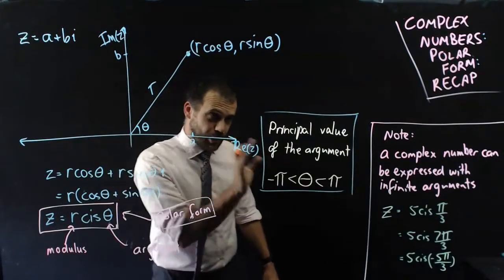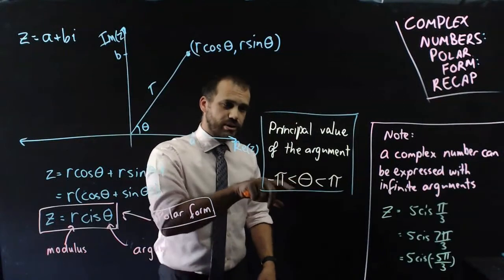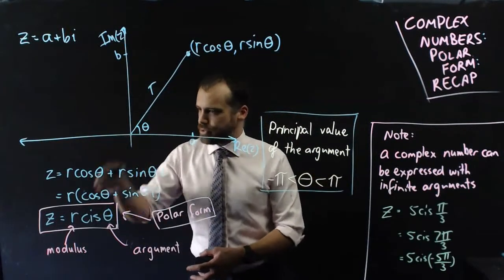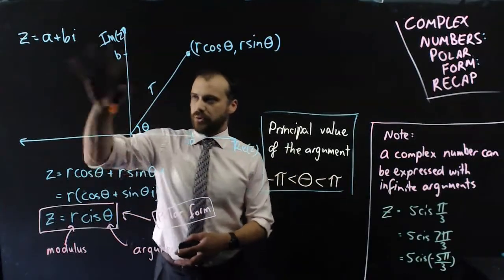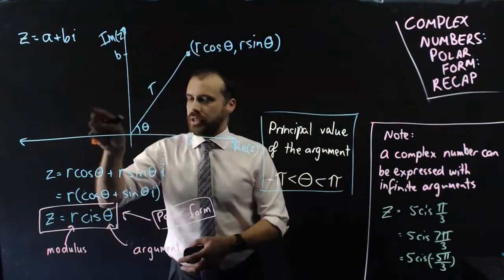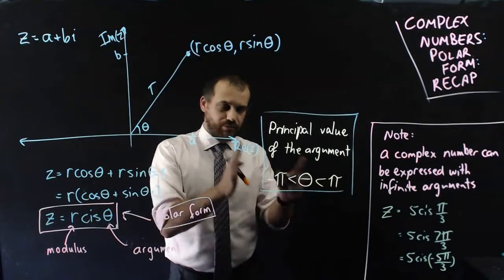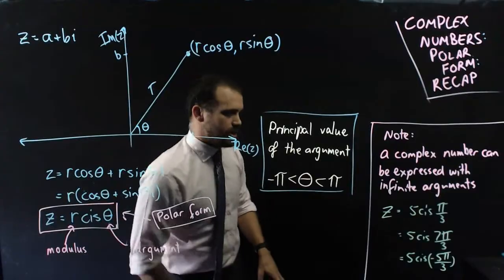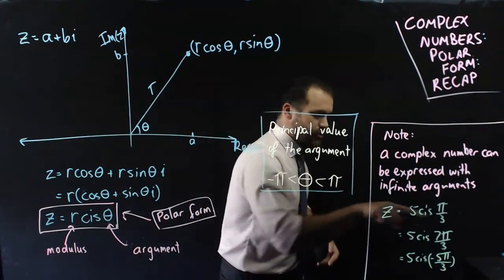But we do have this thing called the principal value of the argument. By convention, it is considered most polite and the principal value of the argument if your theta is between negative pi and pi. So if your complex number is down here somewhere, you took the negative angle. If your complex number is somewhere in quadrant 1 and 2, you use the positive angle up to pi and down to negative pi. That's most polite. So out of these three versions here, only one uses the principal value of the argument and it's that one there.